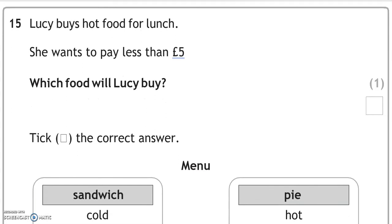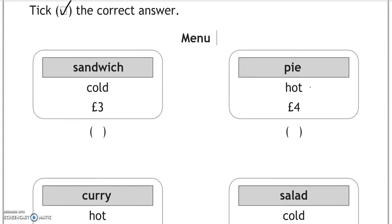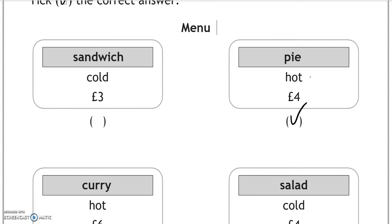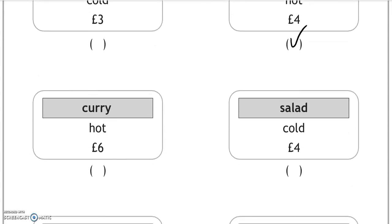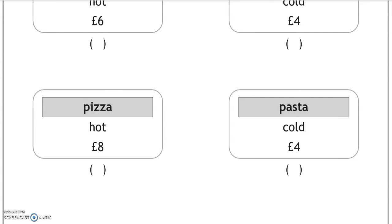Lucy buys hot food for lunch. She wants to pay less than five pounds. Which food will Lucy buy? Check the correct answer. So we're looking for hot and under five pounds. So pie, four pounds. That is the correct option. And this is the end of the paper.